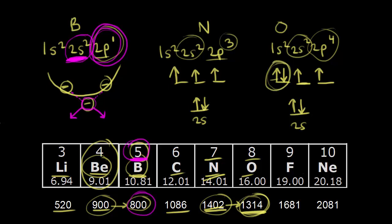From there on we see the general trend again. The ionization energy for fluorine rises to 1,681 kJ/mol, and for neon we again see an increase in ionization energy, consistent with the increasing effective nuclear charge across the period.